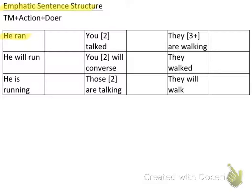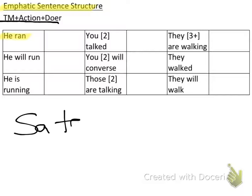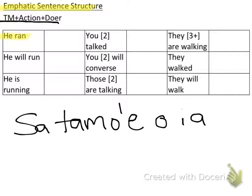The first one is 'he ran.' How would I say that in Samoan? Using the key: tense marker, action, doer. First, what tense am I speaking in? 'Ran' is past tense, so I use 'sa' or 'na' for past tense. Then my action — the word for run is 'tomoe.' And then my doer, 'he,' which is 'oia.' So 'sa tomoe oia' is how you say 'he ran' in Samoan.